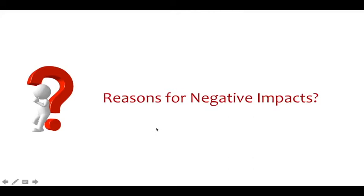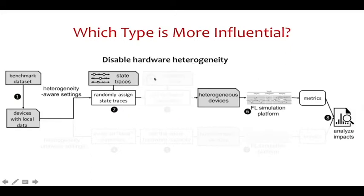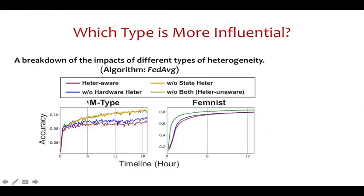After exploring the non-trivial impacts of heterogeneity, we would also like to investigate the reasons for these negative impacts. We first investigate which type of heterogeneity is more influential. To analyze their individual impacts, we disable hardware heterogeneity so all devices have the same computational and communication capacity. Similarly, in another experiment, we disable state heterogeneity so devices are always available at any time and will never drop out.